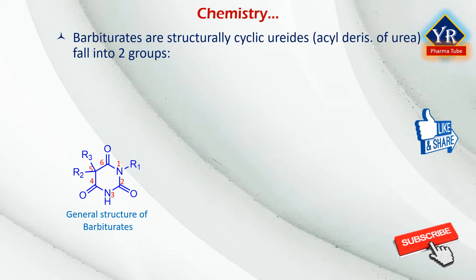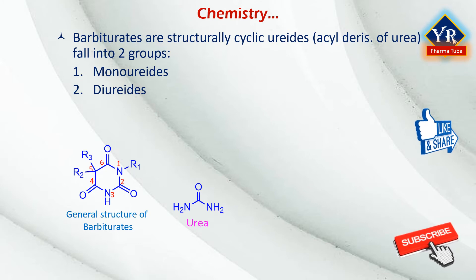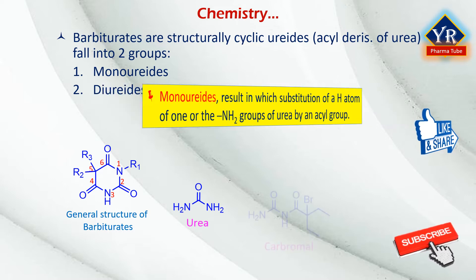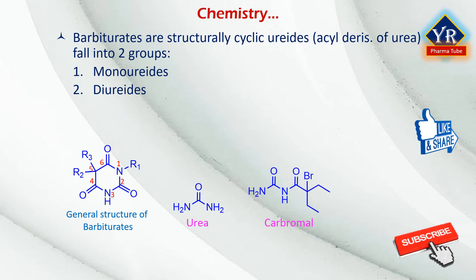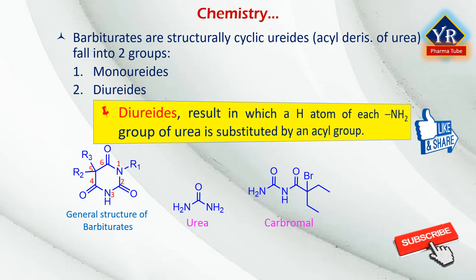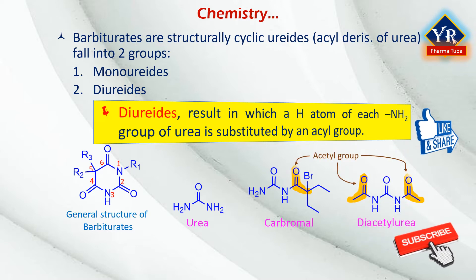Barbiturates are structurally cyclic ureides. In general, the ureides or acyl derivatives of urea fall into two groups: monoureides and diureides. Monoureides result from the substitution of a hydrogen atom of one amino group of urea by an acyl group — for example, carbromol, which is chemically bromodiethyl acetyl urea. Diureides have a hydrogen atom of each amino group substituted by an acyl group — for example, diacetyl urea.